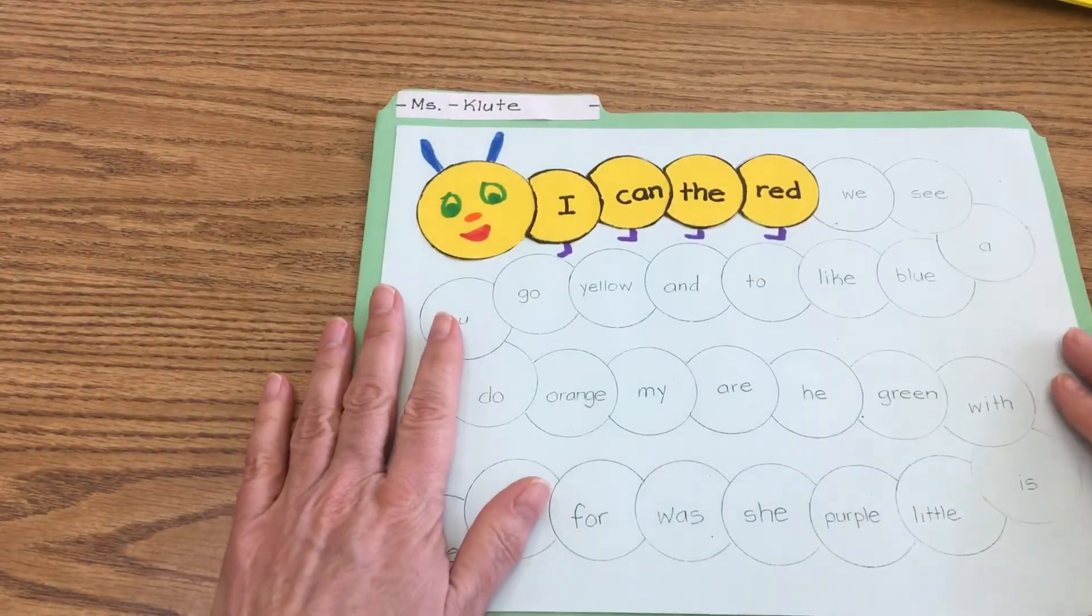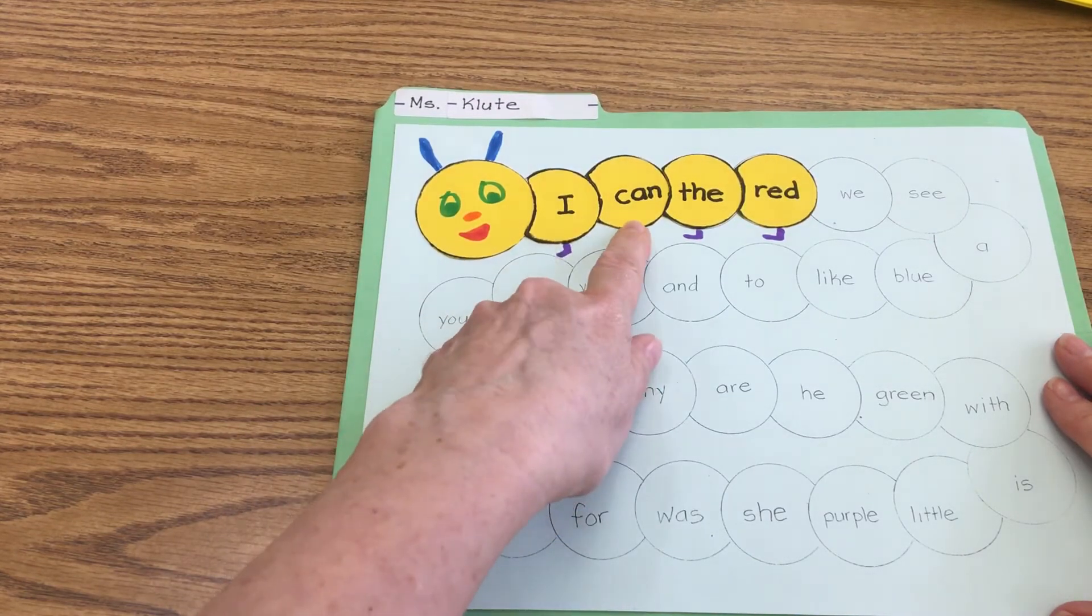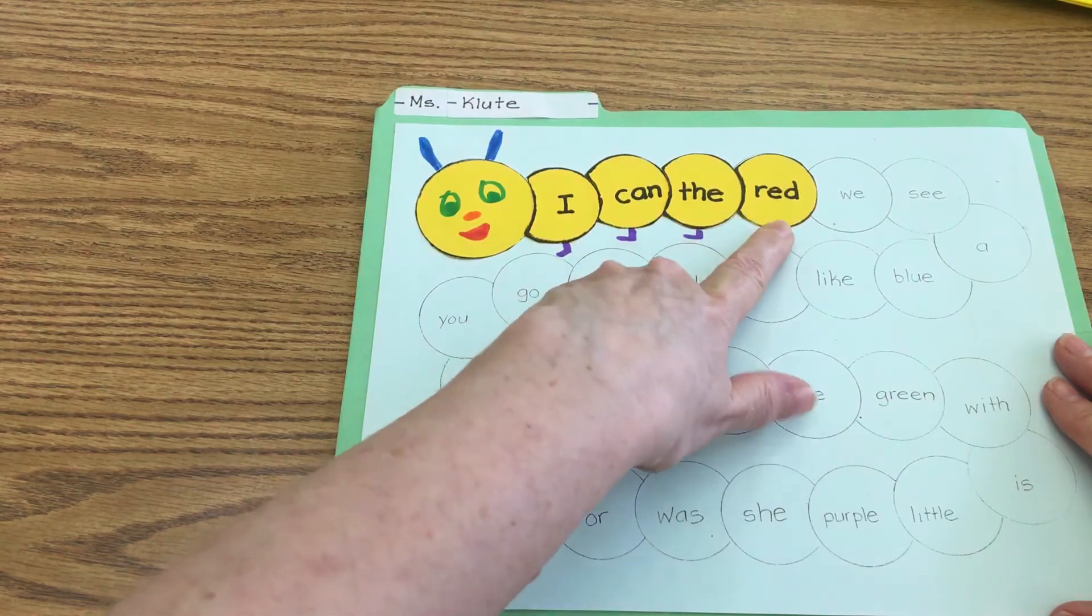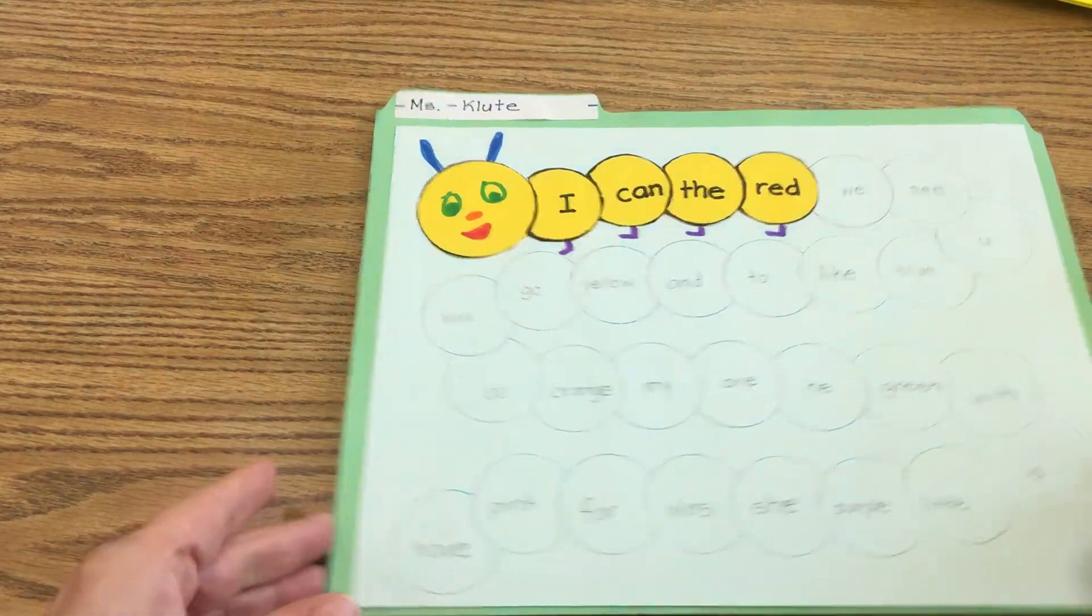And then the last thing we're going to do today in our lessons is just read our sight word caterpillar. Okay? It's good to practice this every day. So go ahead and point and read with me. I can the red. One more time. I can the red. All right.